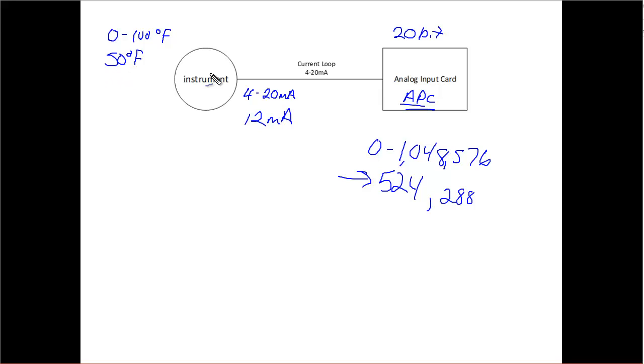So hopefully you're starting to see how this works here. I get this, I know if I'm seeing this that I should be seeing 12 milliamps of current in this and then I know back to my engineering units that it's 50 degrees Fahrenheit.